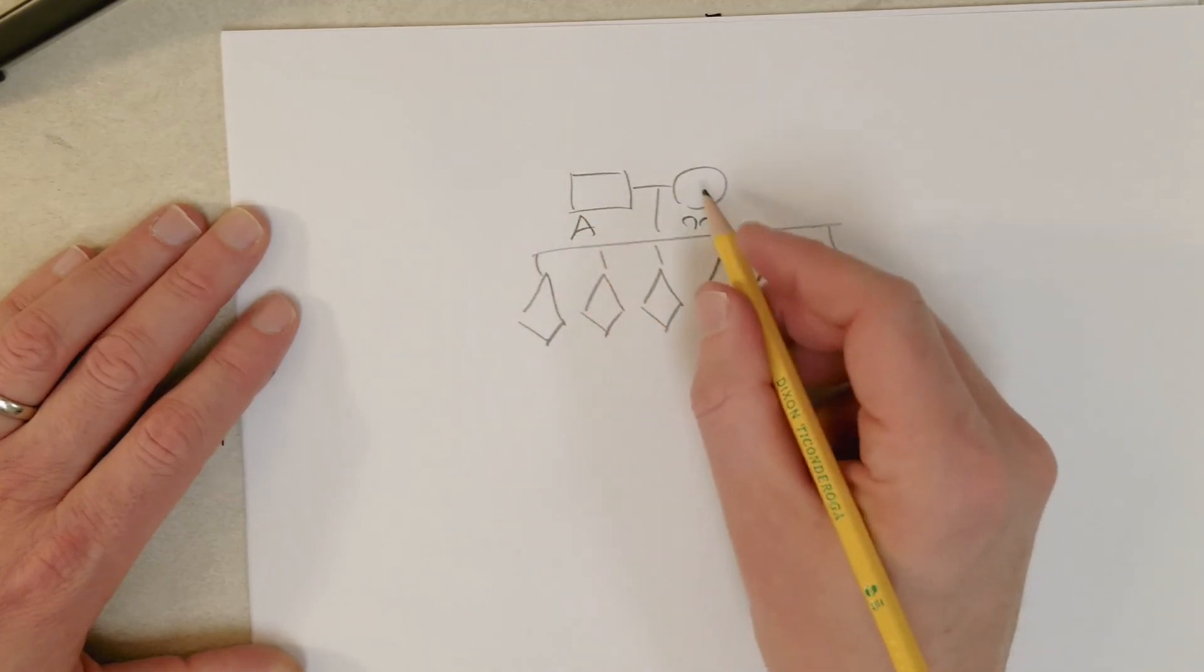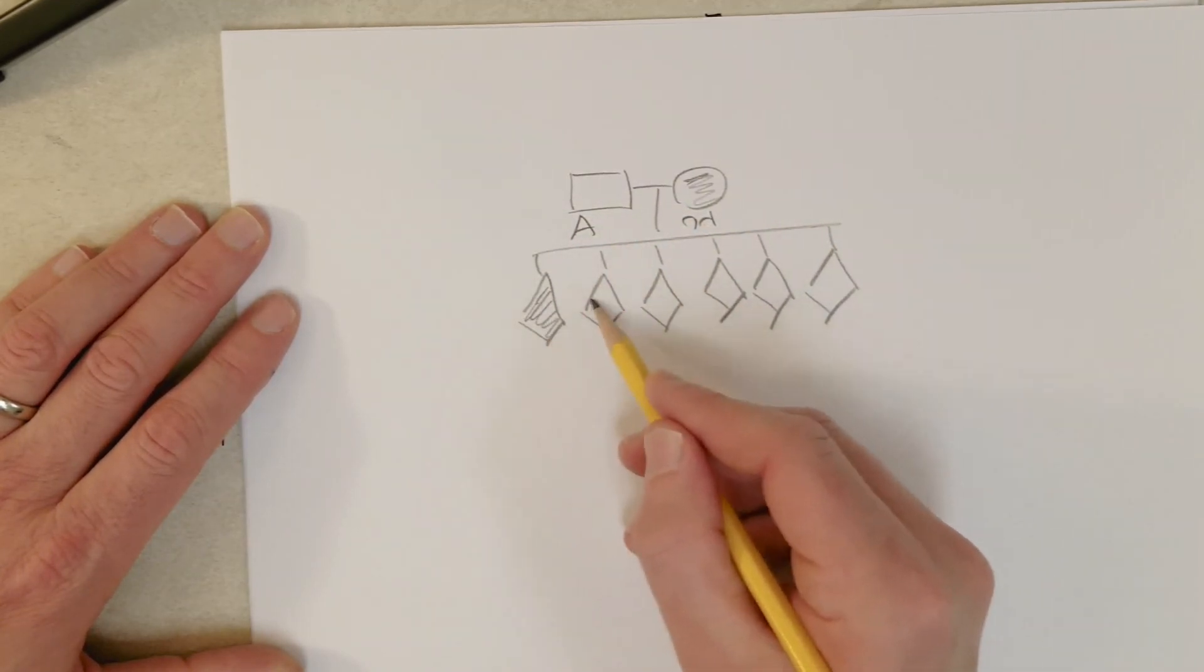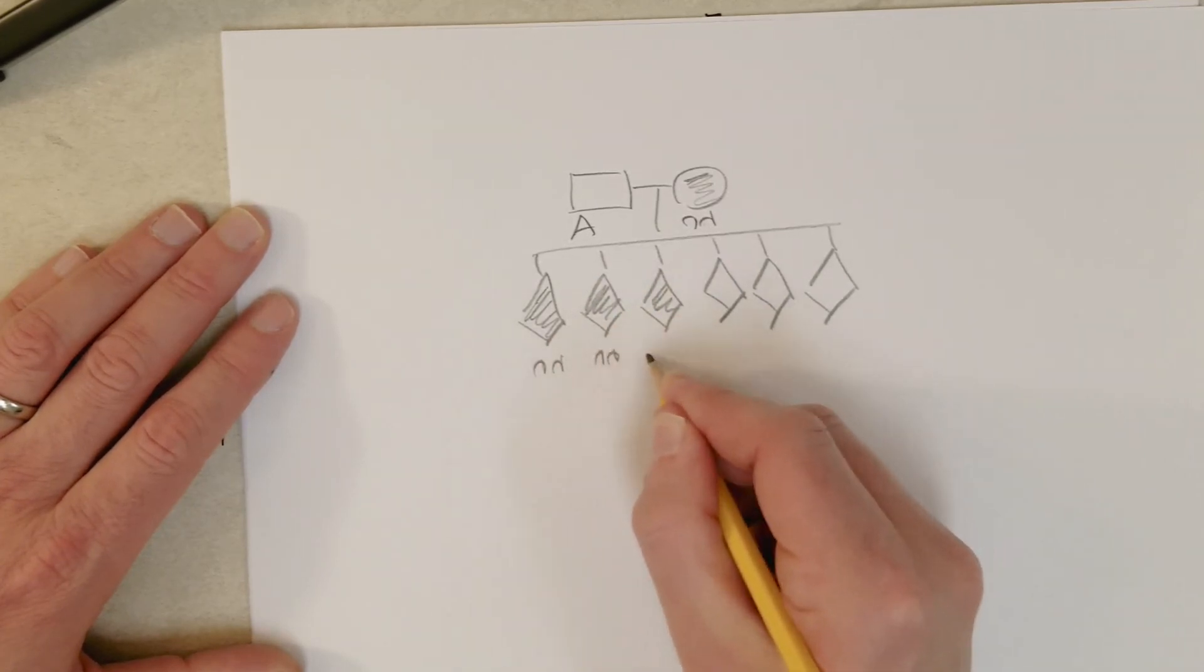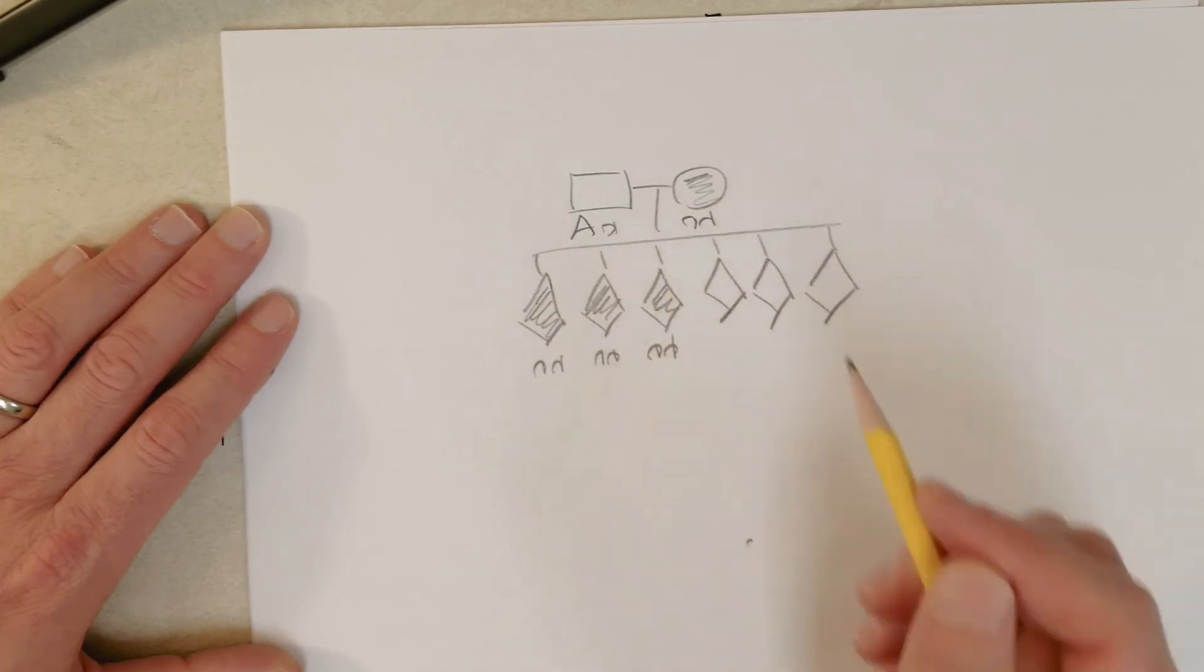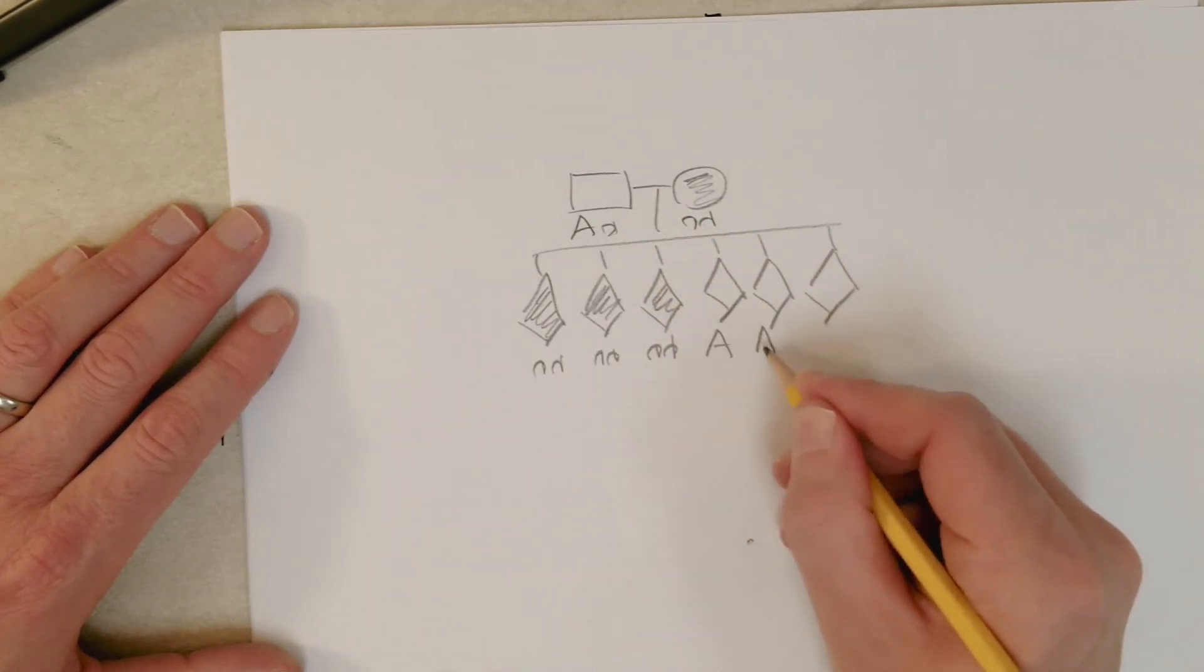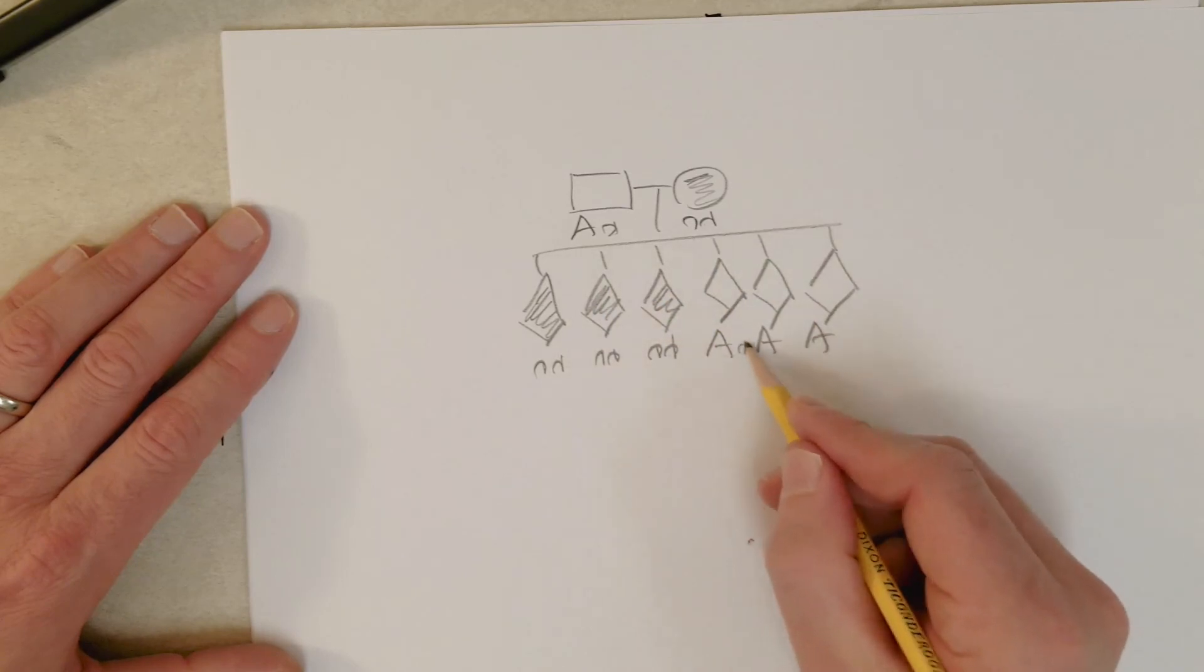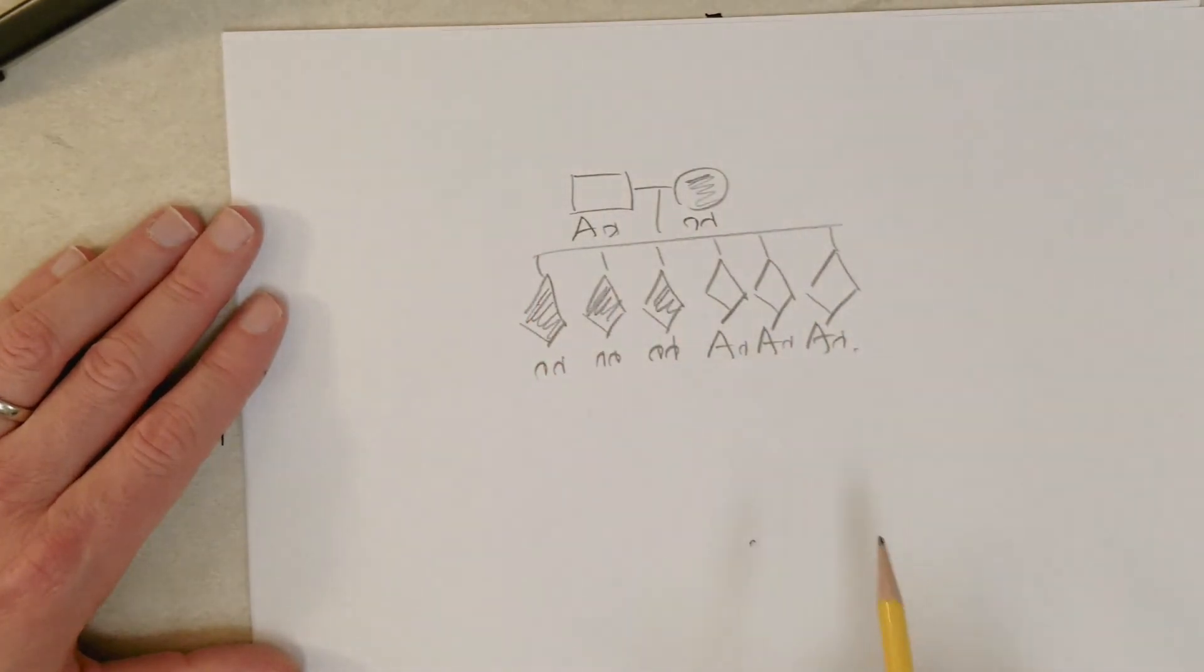Albino mom, normal dad, half of the kids are albino. So we know these kids inherited small a from the mom, they must have got a small a from dad also. So these guys are all normal, so they have to have at least a big A allele here, and they got a little a from mom.